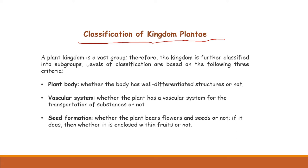The first criterion is the plant body. A normal plant has roots, stem, leaves, flowers, and fruits. We assess whether the plant body is well differentiated — whether it has well-differentiated structures like stem, roots, and leaves — or whether there is no such differentiation. On this basis, plants are divided into different groups.